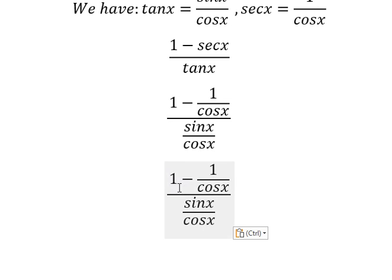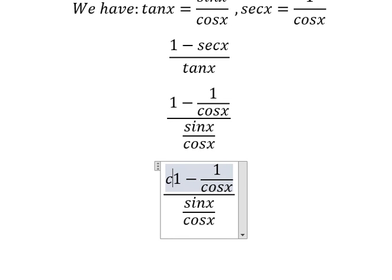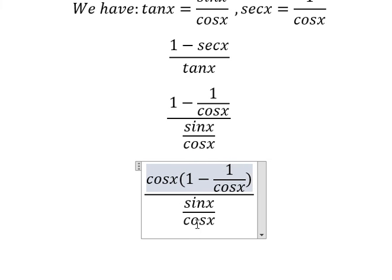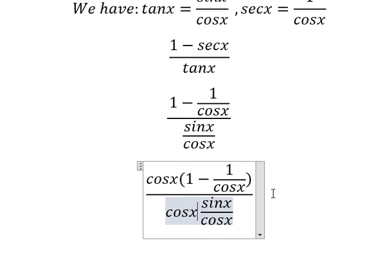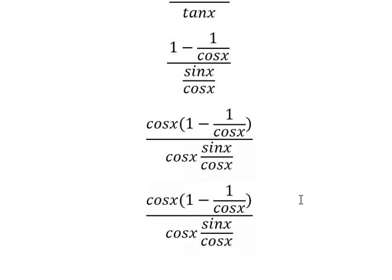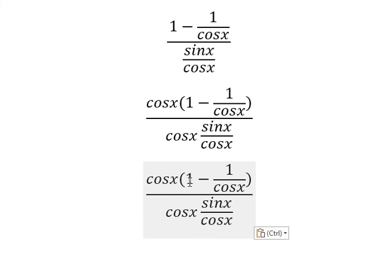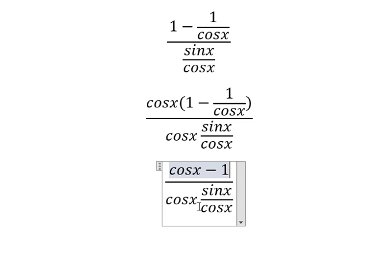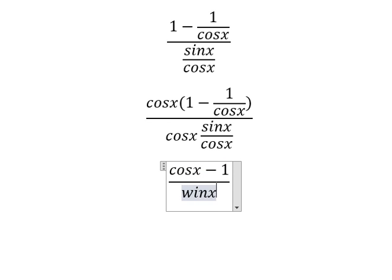Next, we need to multiply by cosine x on the numerator and denominator. So cosine x multiplied by 1 and 1 over cosine x gives us cosine x minus 1. We simplify cosine x over cosine x, and we have sine x.